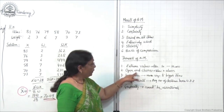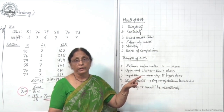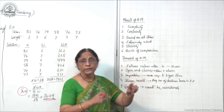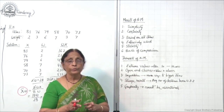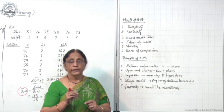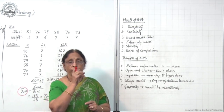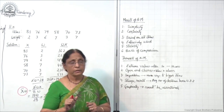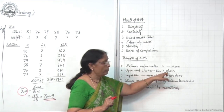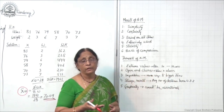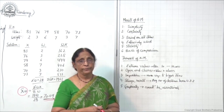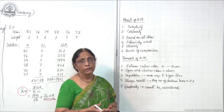The second demerit is open end classes. When open end classes are given — where both ends are open (below and above) — you have to assume the ends. You have to assume certain figures as the end of the first class and last class. When you assume these figures, the result may not be very accurate, so this is a little drawback.